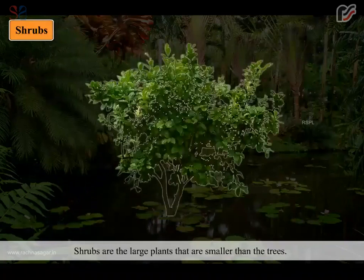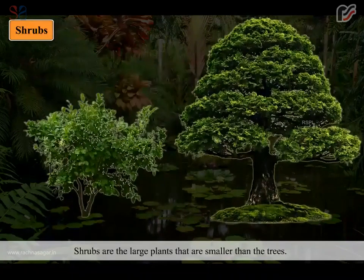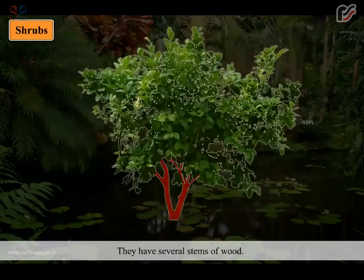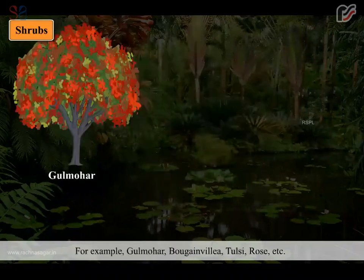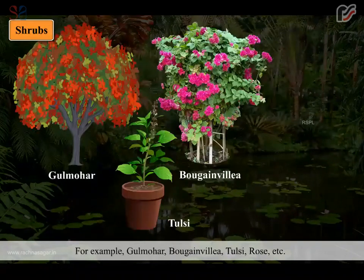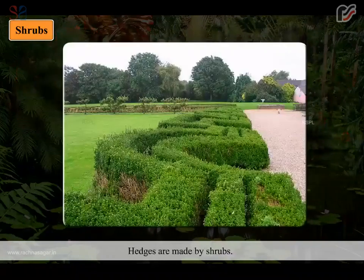Shrubs are large plants that are smaller than trees. They have several woody stems. Their branches are borne on hard stems. They also live for many years. For example, gulmohar, bougainvillea, tulsi, rose, etc. Hedges are made by shrubs.